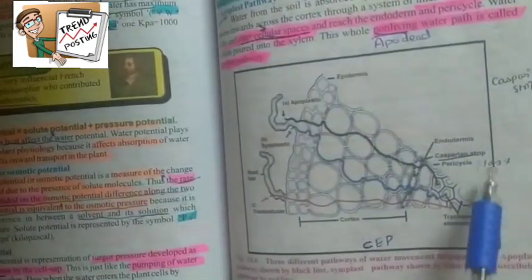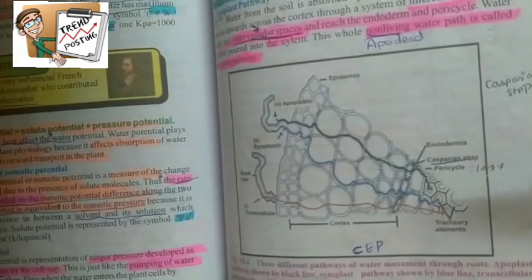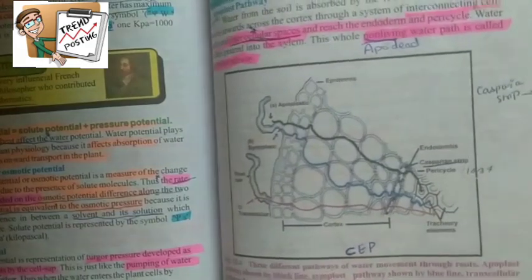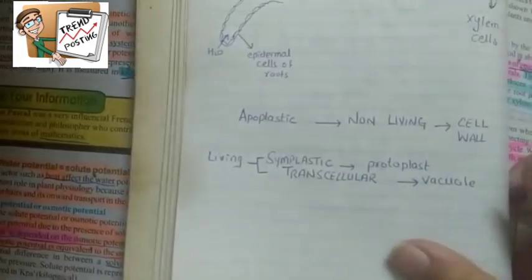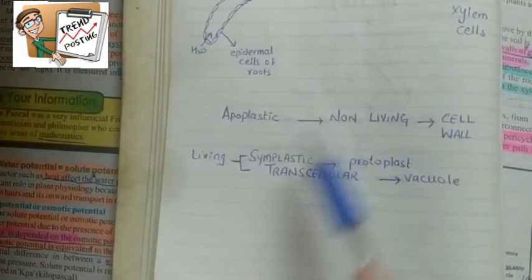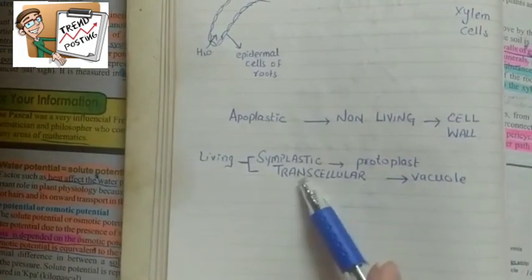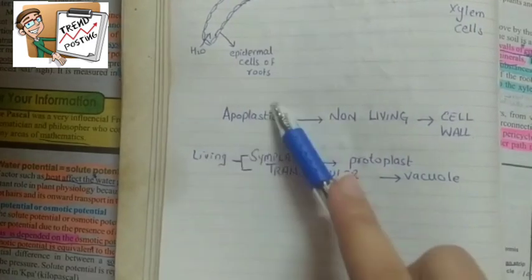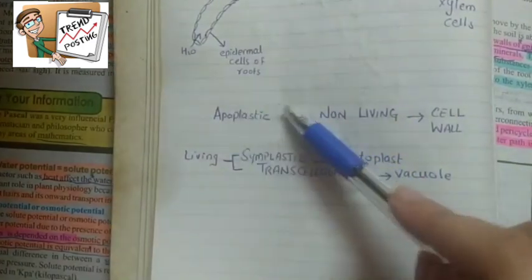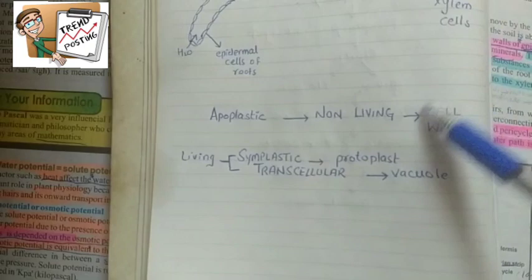You need to know the differences between these pathways. Also, there are diagrams shown with information not in your theory textbook, but questions are asked from them. The apoplastic pathway is your only non-living pathway, while symplastic and transcellular pathways are living pathways.